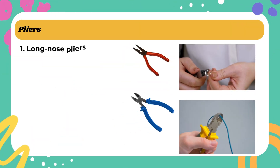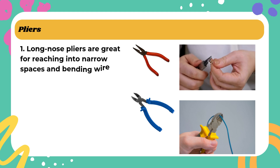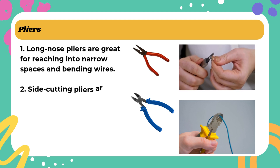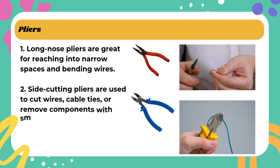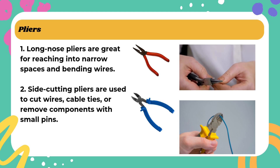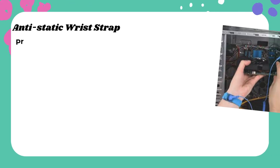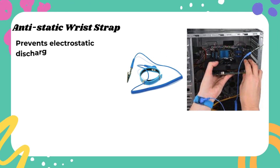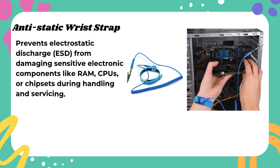Pliers: Long-nose pliers are great for reaching into narrow spaces and bending wires. Side cutting pliers are used to cut wires, cable ties, or remove components with small pins. Anti-static wrist strap prevents electrostatic discharge (ESD) from damaging sensitive electronic components like RAM, CPUs, or chipsets during handling and servicing.